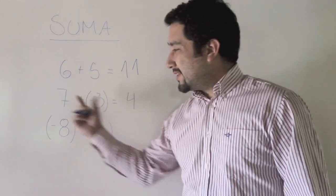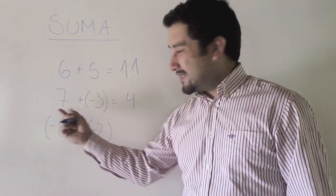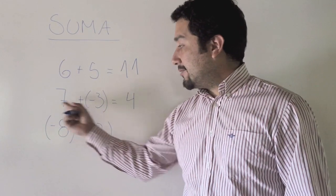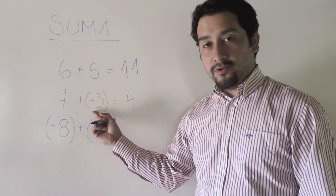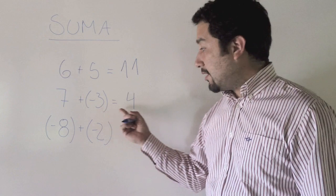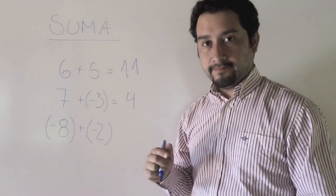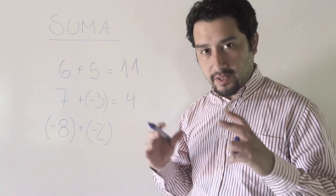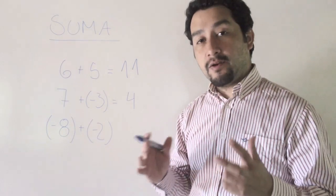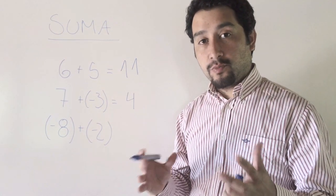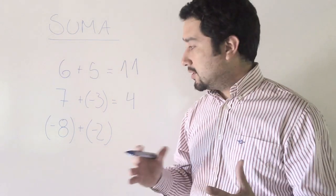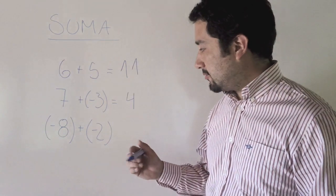En el caso que hubiese sido inverso, que el signo hubiese sido negativo y este positivo, no hubiese quedado menos cuatro. Entonces para que ustedes puedan ir evaluando cómo se opera con signos distintos.